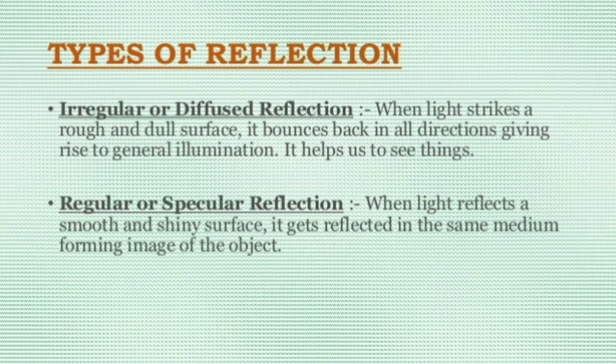Types of reflections: there are two types. Number one is irregular or diffuse reflection — when light strikes a rough and dull surface, it bounces back in all directions, giving rise to general illumination. Number two is regular or specular reflection — when light reflects off a smooth and shiny surface, it gets reflected in the same medium, forming an image of the object.